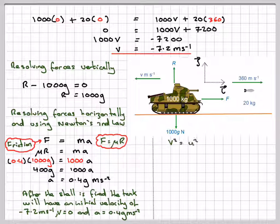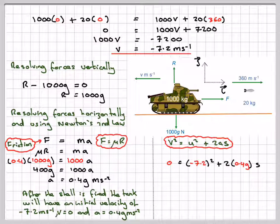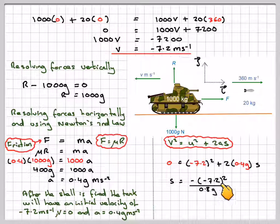To find the distance, V squared equals U squared plus 2AS. Eventually, once the tank has fired the shell and moves backwards, it will stop, so therefore 0 will be the final velocity, and equals minus 7.2 squared, the initial velocity, plus 2 times 0.4G times the distance which we want to find. So S equals minus 7.2 squared divided by 0.8G.